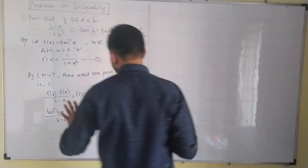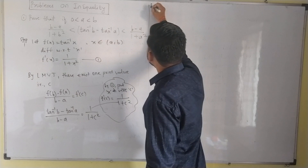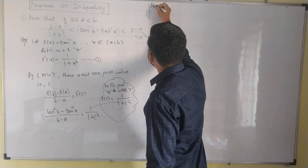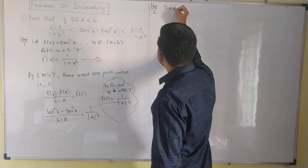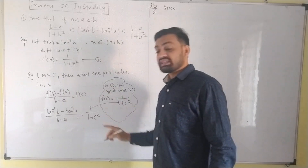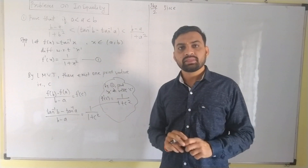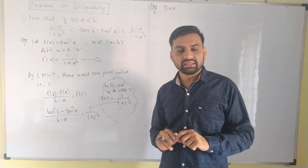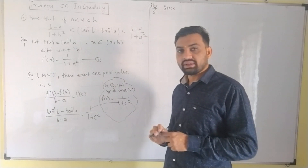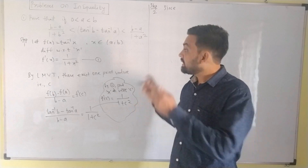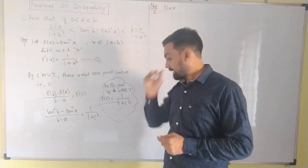Let's see what we have done. Step number 2. Since this is the value of C. We have seen some examples in Rolle's Theorem, Lagrange's. This is the value of C. This is the interval of A and B.